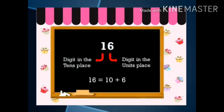Numbers 11 to 19 are placed in the tens and in units column. Now let's look at the numbers again. Look at the number 16. 1 is the digit at the tens place and 6 is the digit at unit's place. 1 in the tens place represents 1 ten and 6 in the unit's place represents 6 units. Hence, 16 is equal to 10 plus 6.